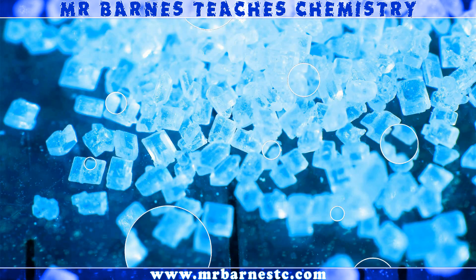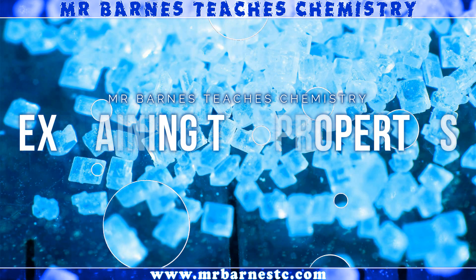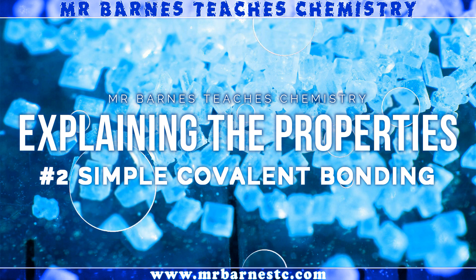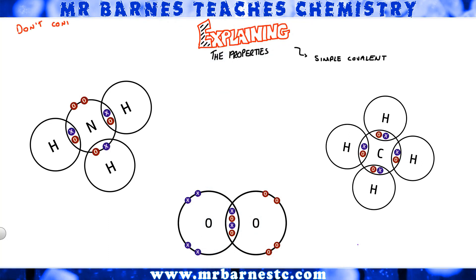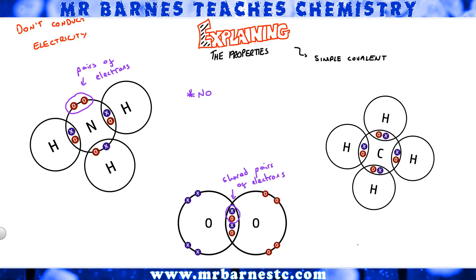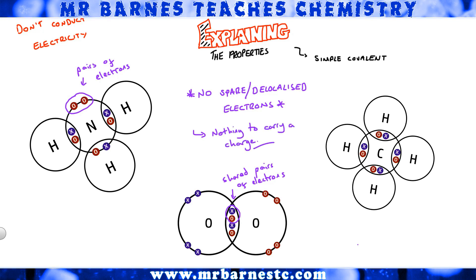Now for simple covalent — carbon dioxide and water. They have low melting points and don't conduct electricity at all. They don't conduct because there are shared pairs of electrons but no spare or delocalized electrons — no charged particles that can move — so nothing can carry a charge. One mark for saying there are no spare or delocalized electrons, and one mark for saying nothing can carry a charge.